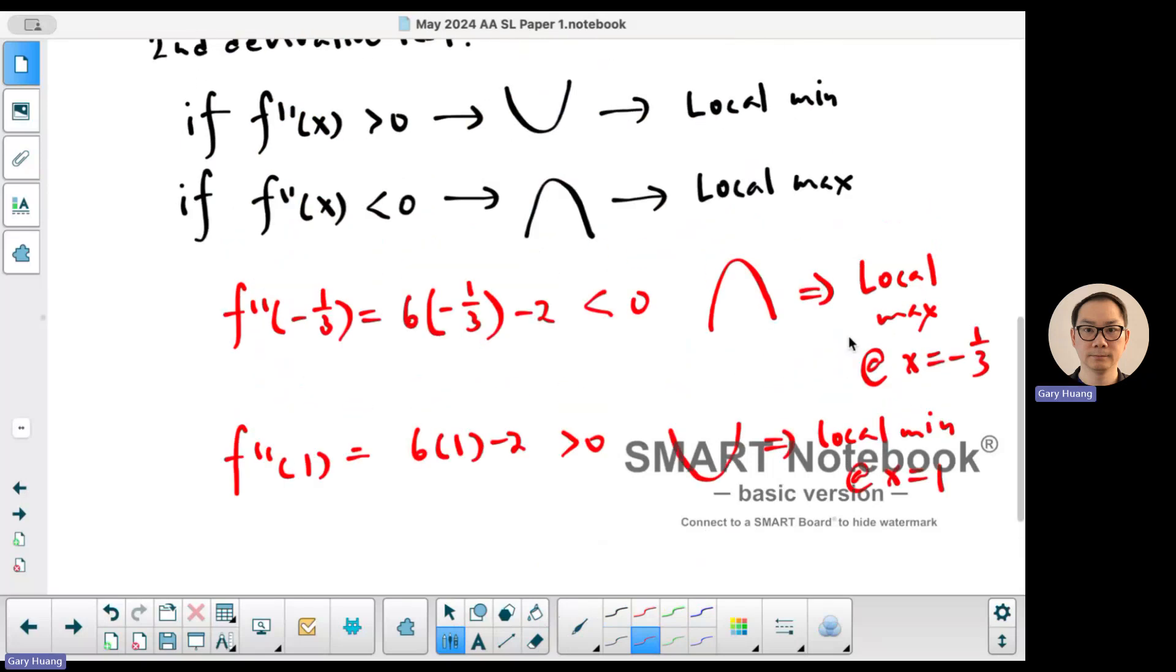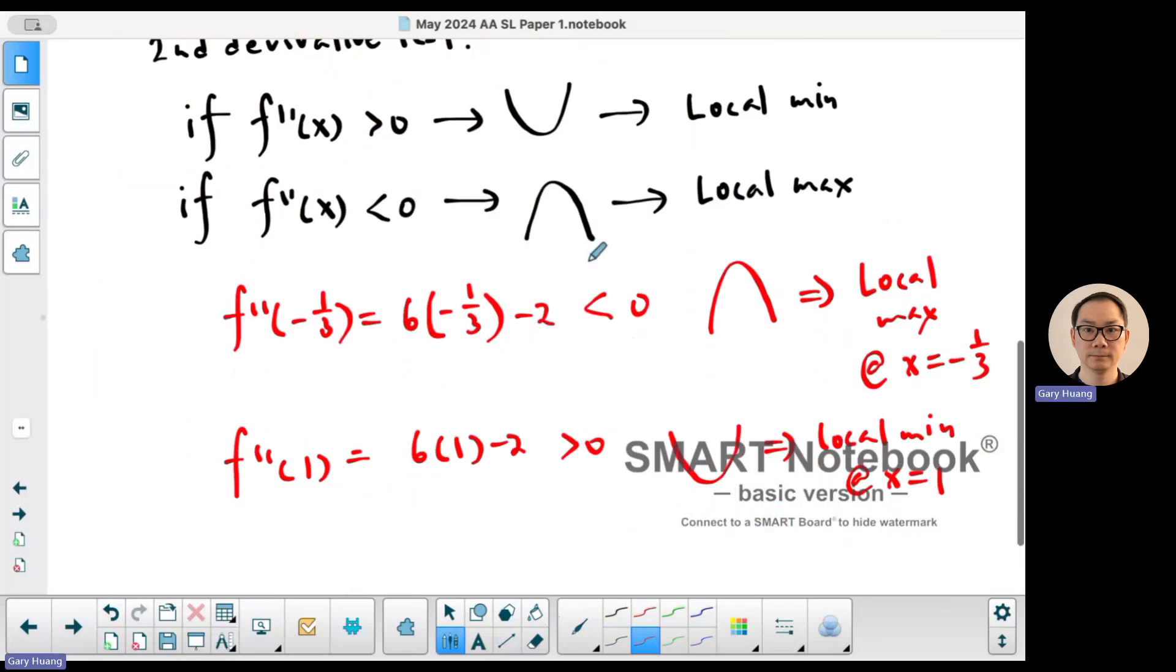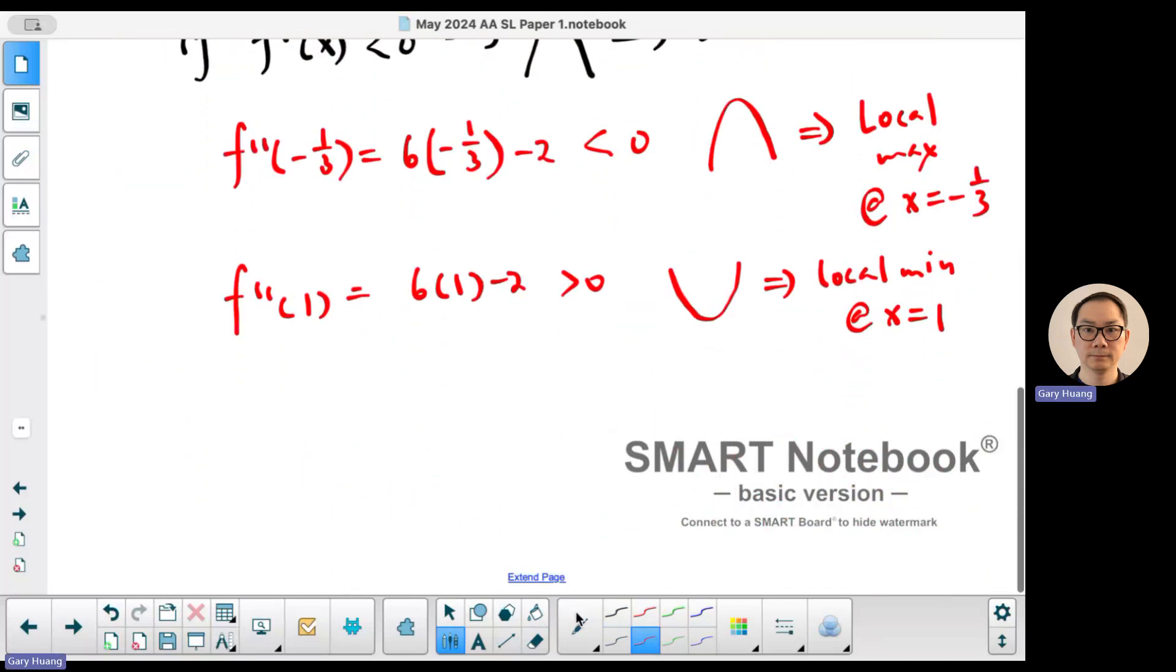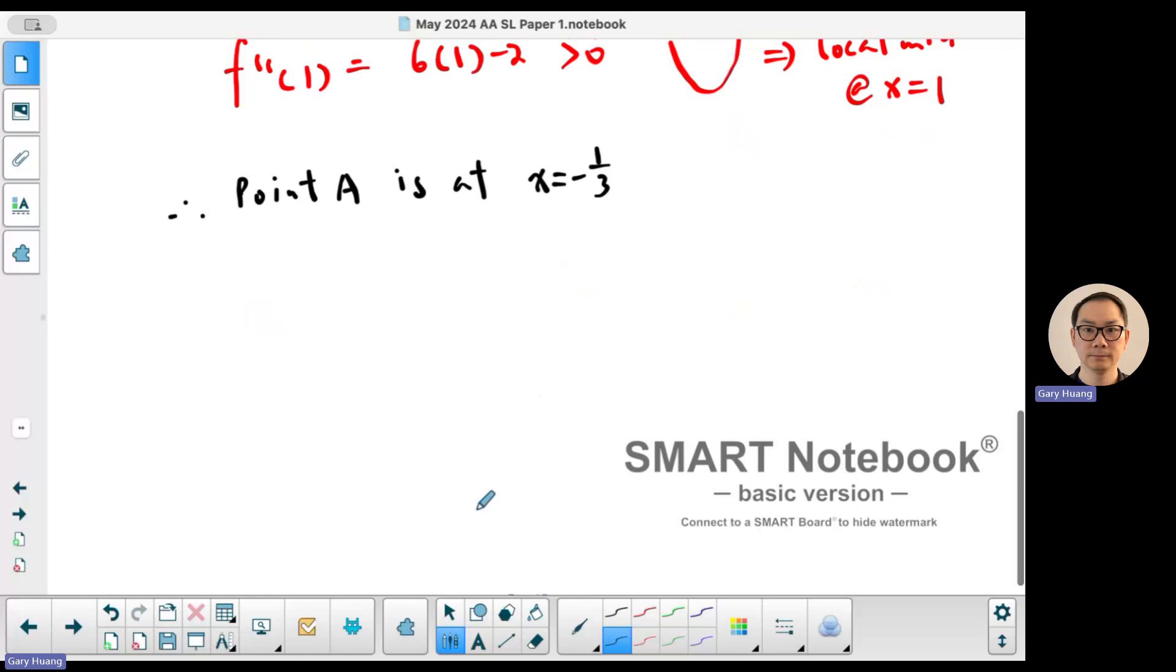Now we're looking for the maximum. So we are looking for the coordinates of A. So therefore point A is at x equals -1/3. To find a y value I have to substitute the -1/3 into the original equation. And the original equation is x³.